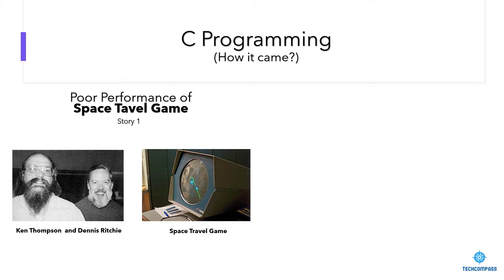So they thought to create a new game which is better in performance and supports multi-players. There was a machine PDP-7 lying idle at Bell Labs where they were working. They decided to develop a new game on that machine. But the PDP-7 machine did not have any operating system. So they started working on writing an operating system. They planned and developed the OS and game completely. They used assembly language to create the OS and the game in the PDP machine.